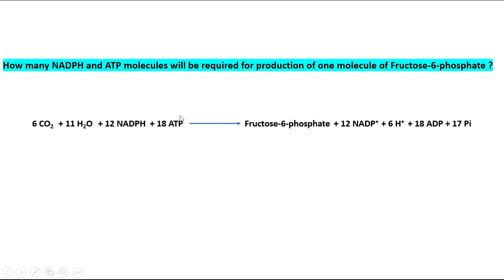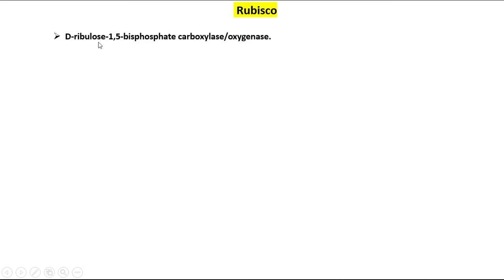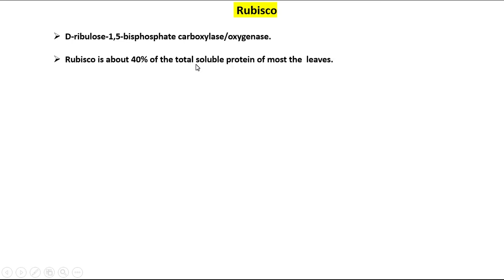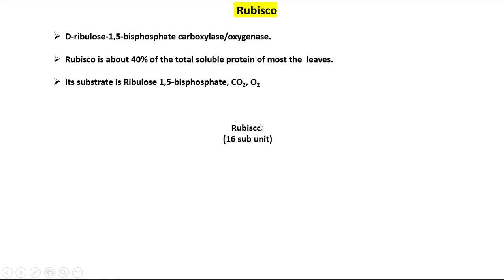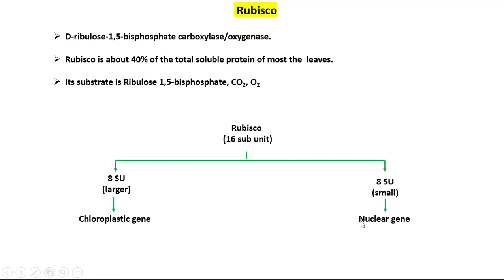Now we will discuss rubisco and its regulation. The full form of RuBisCO is D-ribulose-1,5-bisphosphate carboxylase oxygenase. RuBisCO constitutes about 40% of the total soluble protein of most leaves. Its substrates are ribulose-1,5-bisphosphate, CO2, and O2. RuBisCO contains 16 subunits: 8 large subunits encoded by the chloroplastic gene and 8 small subunits encoded by the nuclear gene.